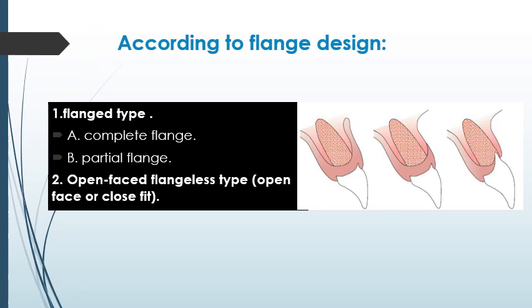According to flange design, immediate dentures can be classified as flanged type — either complete flange or partial flange — and open-faced or flangeless type, which can be open-faced or closed-fit.